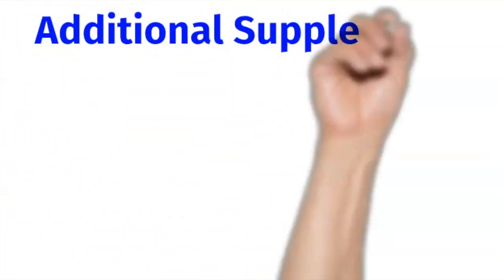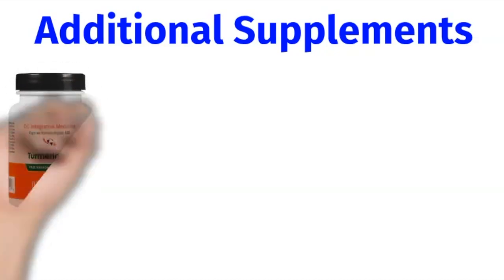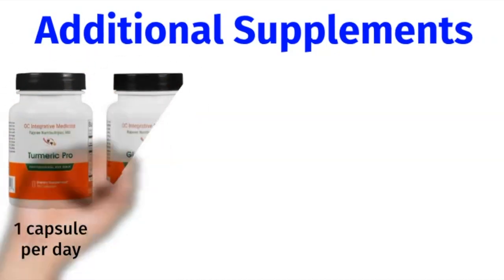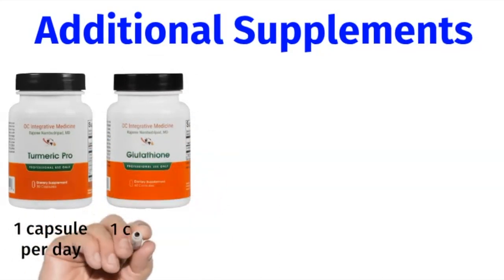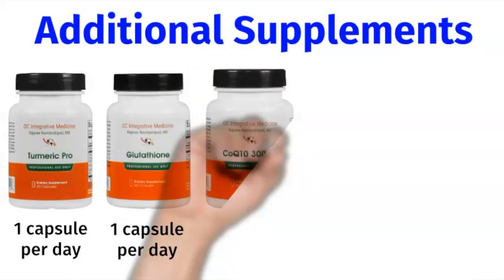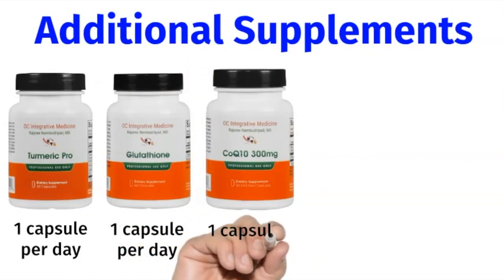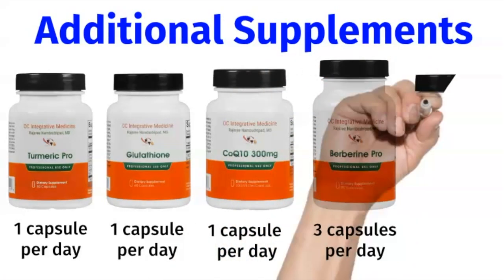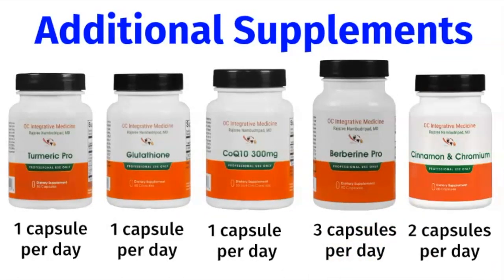Here are some additional supplements that may also be helpful. Turmeric Pro has anti-inflammatory properties, and glutathione is the master antioxidant and detoxifier for all the cells in your body. CoQ10 is an antioxidant that's good for the mitochondria in your cells and the neurons in your brain. If you have insulin resistance, I recommend Berberine Pro and cinnamon and chromium because these help to activate your insulin receptors.